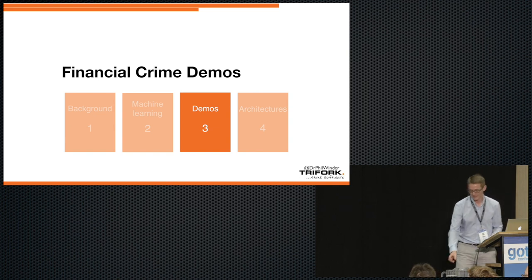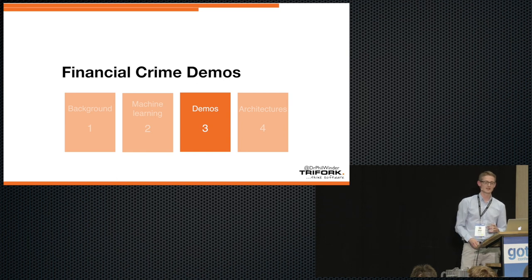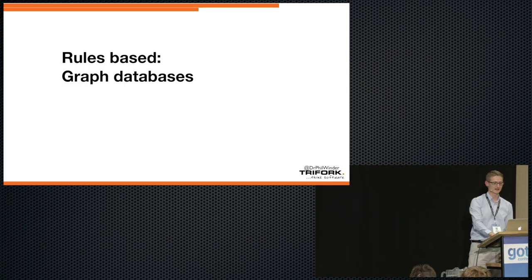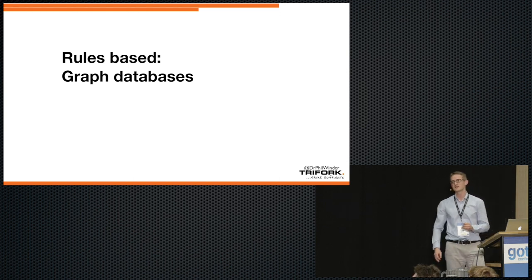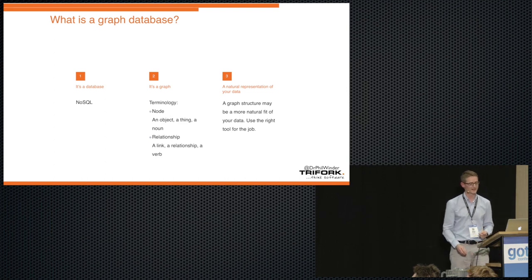Okay, so hopefully that section introduced you to deep learning and some of the ideas and some of the terminology, so when I come to some of the financial demos, this should be much easier to understand. First example is a traditional example, using a rules-based approach. In this case, we're being a little bit fancy, we're using a graph database. Typically, graph databases aren't used as much as we'd like, but they do perform really well in a fraud-based scenario.